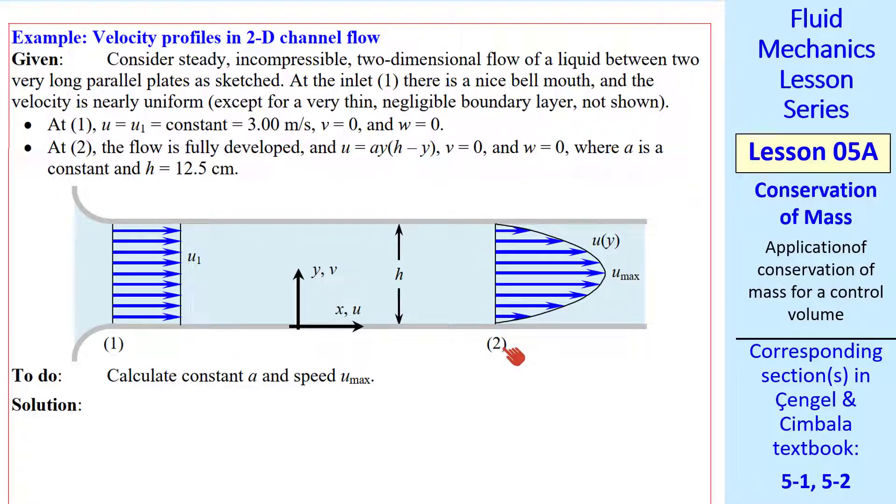At some downstream location 2, the flow is what we call fully developed, which we'll talk about in detail in another lesson. I give this form of the equation for the velocity profile, where A is some constant, and H is given, H is the height between the plates. We have to calculate this constant A and speed U max, which occurs at the middle, between the plates. Note that U is only a function of Y. When it's fully developed, it means that U is no longer a function of X.